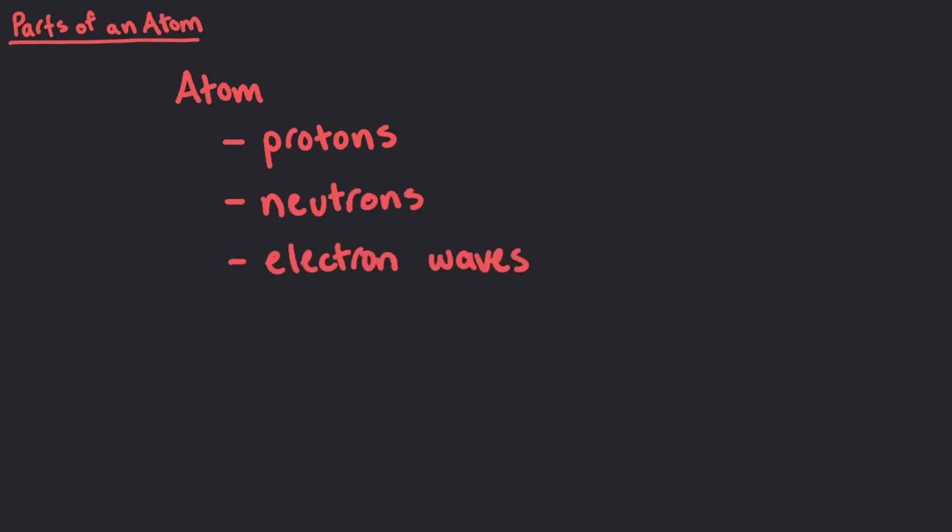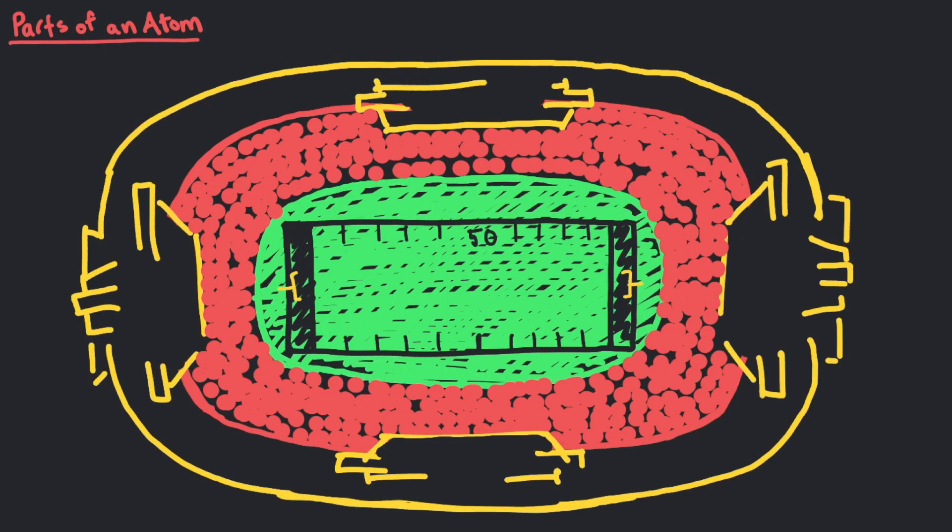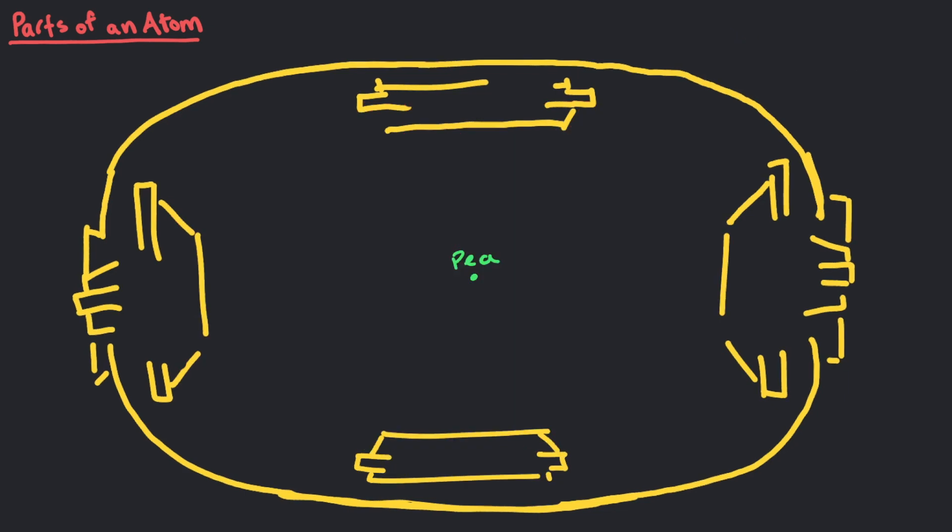Let's take a closer look at an atom by blowing it up really big, say to the size of a football stadium for now. If I were to drop this P in the center of the stadium, we would barely be able to see it. In our football stadium-sized atom, this P represents the nucleus.